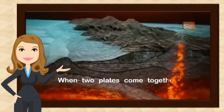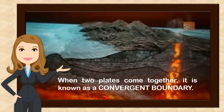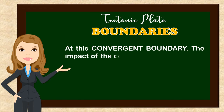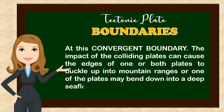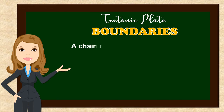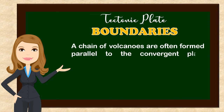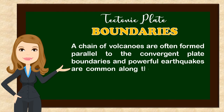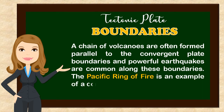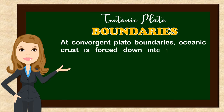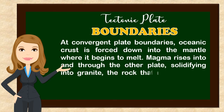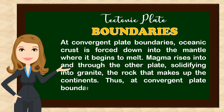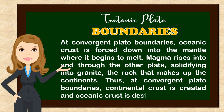When two plates come together, it is known as a convergent boundary. At this convergent boundary, the impact of the colliding plates can cause the edges of one or both plates to buckle up into mountain ranges, or one of the plates may bend down into a deep seafloor trench. A chain of volcanoes is often formed parallel to the convergent plate boundaries, and powerful earthquakes are common along these boundaries. The Pacific Ring of Fire is an example of a convergent plate boundary. At convergent plate boundaries, oceanic crust is forced down into the mantle where it begins to melt. Magma rises into and through the other plate, solidifying into granite, the rock that makes up the continents. Thus, at convergent plate boundaries, continental crust is created and oceanic crust is destroyed.